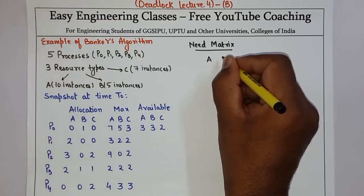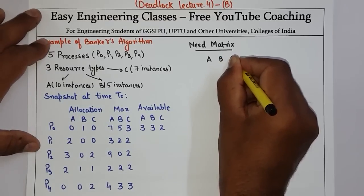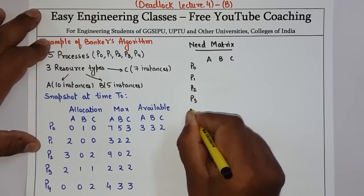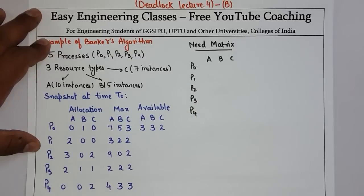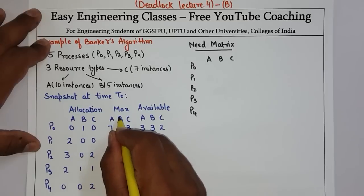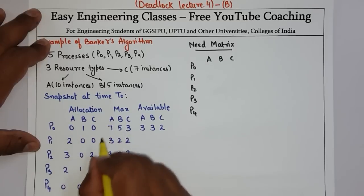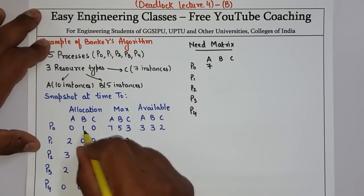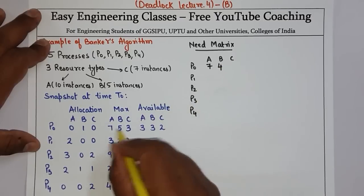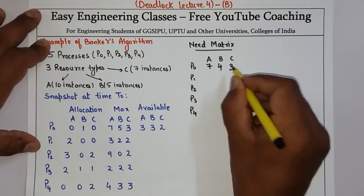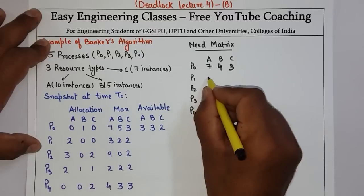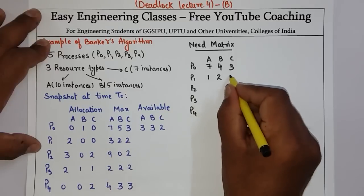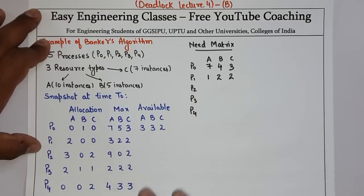The processes are P0, P1, P2, P3, and P4. For P0, the need will be Max minus Allocation for each resource: for A it is 7 minus 0 = 7, for B it is 5 minus 1 = 4, for C it is 3 minus 0 = 3. Similarly for P1: 3 minus 2 = 1, 2 minus 0 = 2, 2 minus 0 = 2. You have to do it for all the processes.